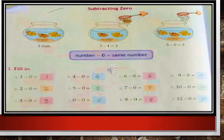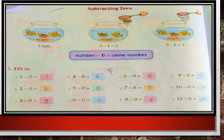Subtract 0 from 2 and the answer will remain 2. Subtract 0 from 5 and the answer will remain 5. Subtract 0 from 7 and it will remain 7. Subtract 0 from 10 and the answer will remain 10. Subtract 0 from 3 and the answer will remain 3. Subtract 0 from 0 and the answer will remain 0. Subtract 0 from 8 and from 12 — the answer will remain 8 and 12 as they are. The digit will not change.